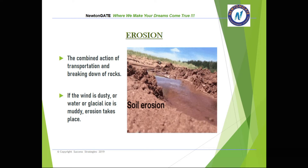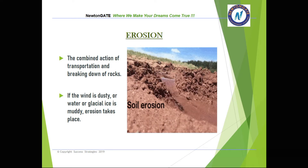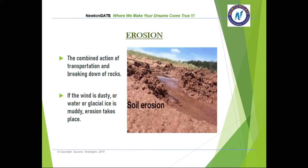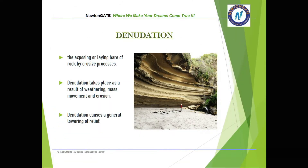You can see from the pictorial representation what the process of soil erosion actually looks like. The next concept is denudation, which means the exposing or laying bare of rock by erosive processes. Denudation takes place as a result of the combined action of weathering, mass movement, and erosion. Denudation causes a general lowering of relief, that is, the topography.